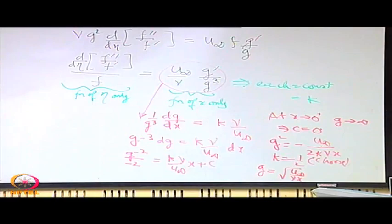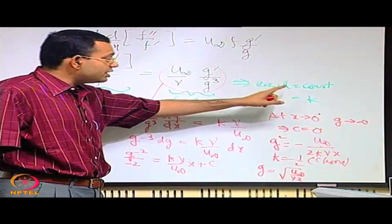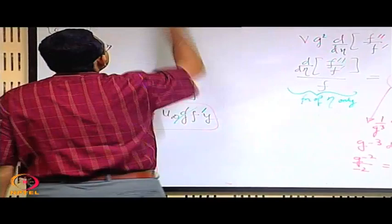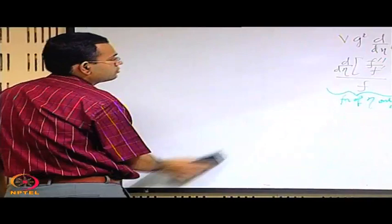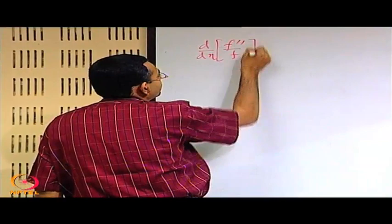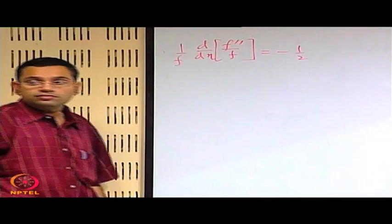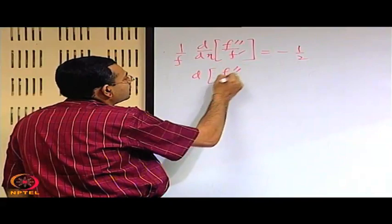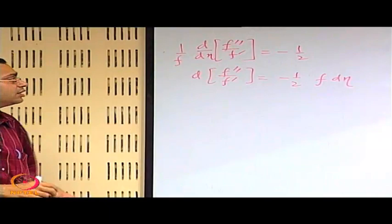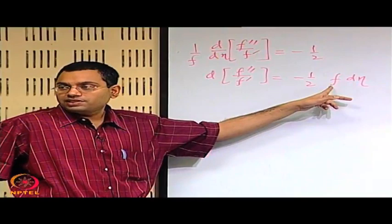With the same k = −1/2, we can solve for f, since u/u∞ = f gives the velocity profile. The equation becomes: d/dη(f″/f′) = −(1/2) f. So d(f″/f′) = −(1/2) f dη, which is in separable and integrable form. Although f is not known explicitly as a function of η, the form is separable.